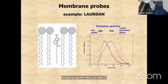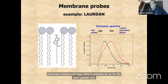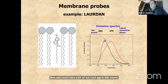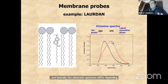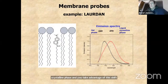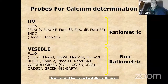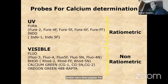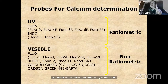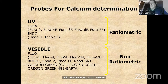Membrane probes include Laurdan, which is probably by far the most popular one now — you'll hear a lot about Laurdan in this course. The emission spectrum shifts depending on the physical state: gel phase or liquid crystalline phase. You'll learn all about that from Leonel and others. Probes have also been popular for years for calcium determinations in and out of cells, using ratiometric methods looking at the ratio of two excitation or emission wavelengths, or non-ratiometric where raw intensity or lifetime changes with calcium or other ions.